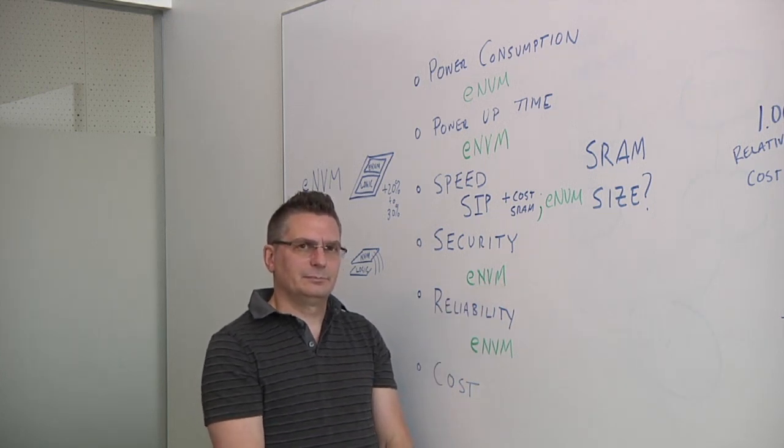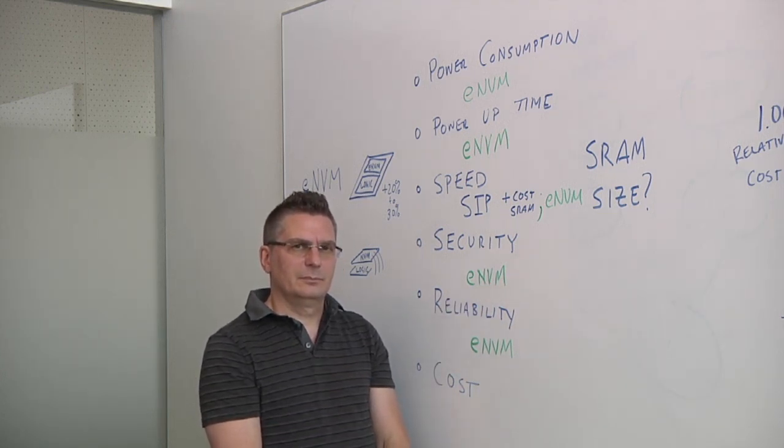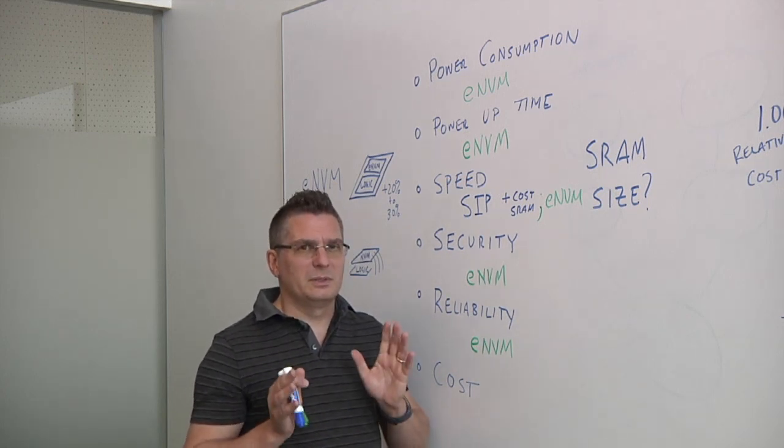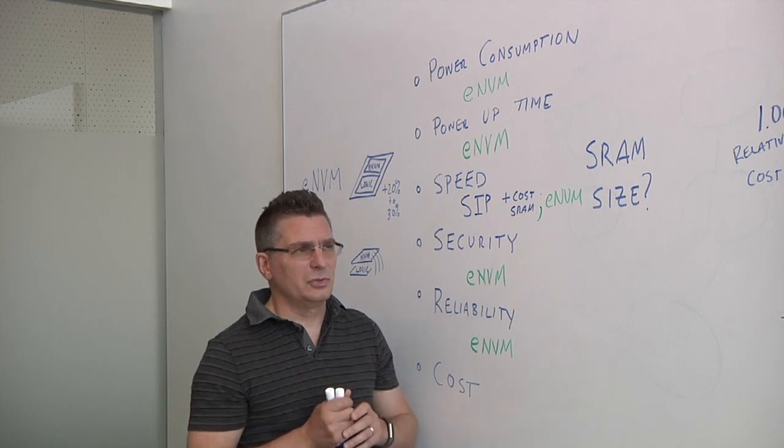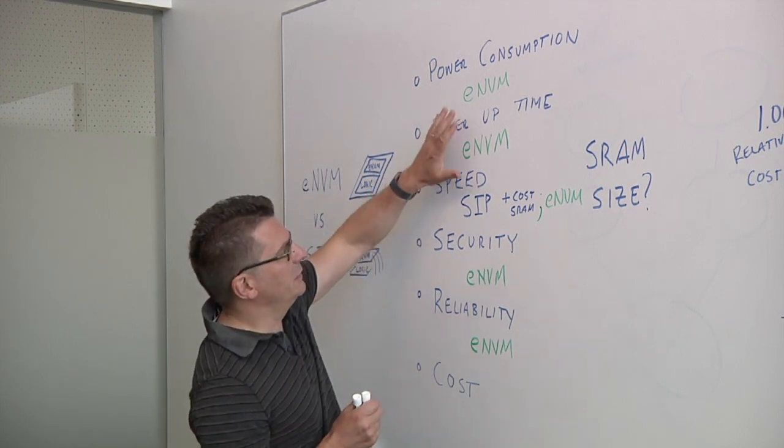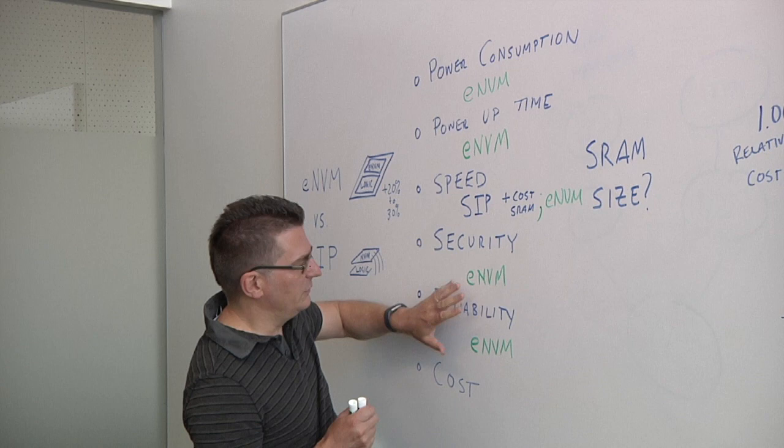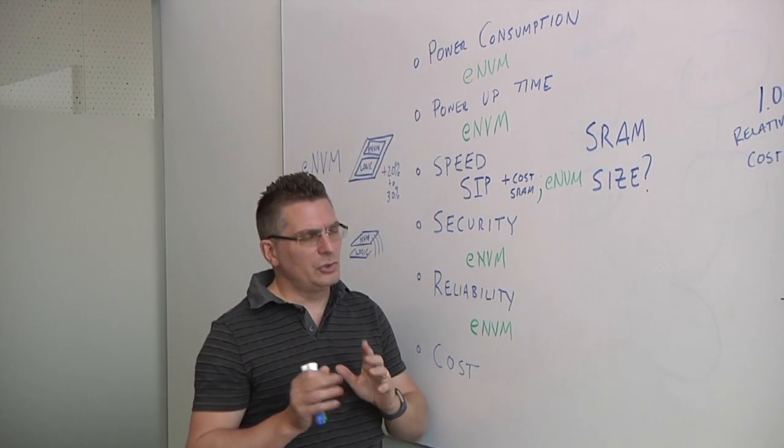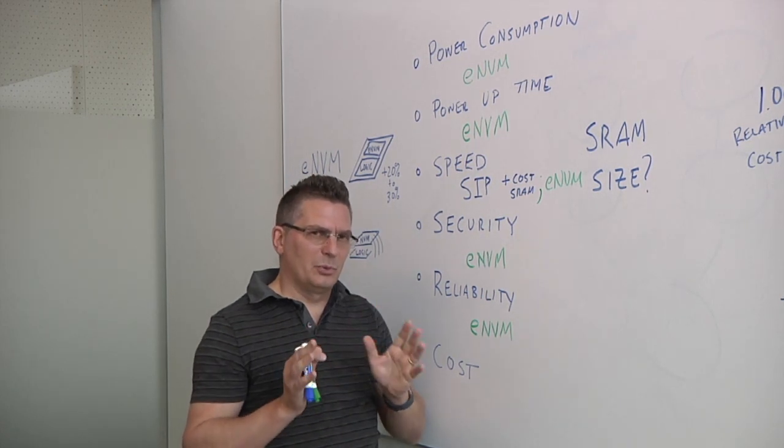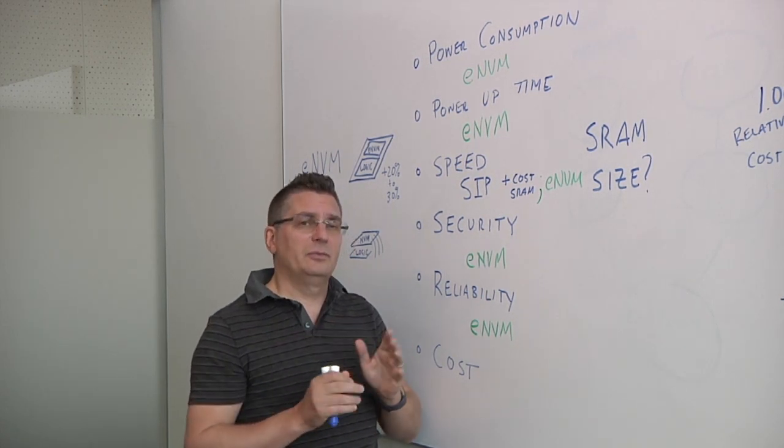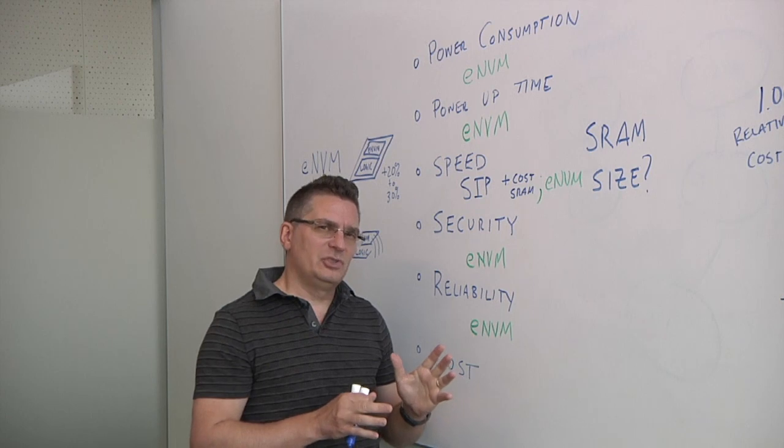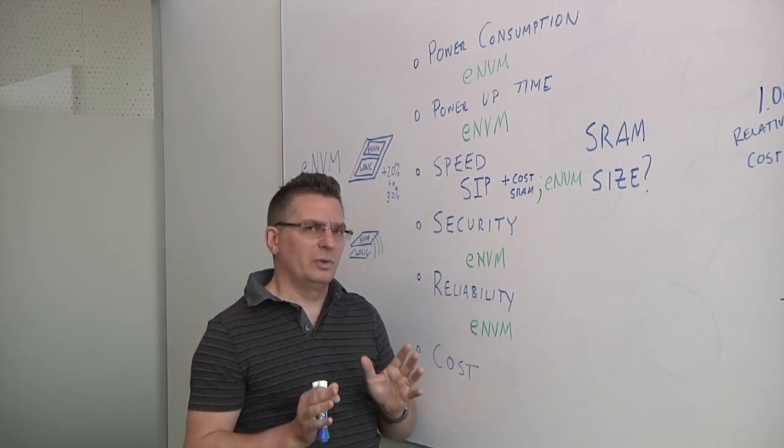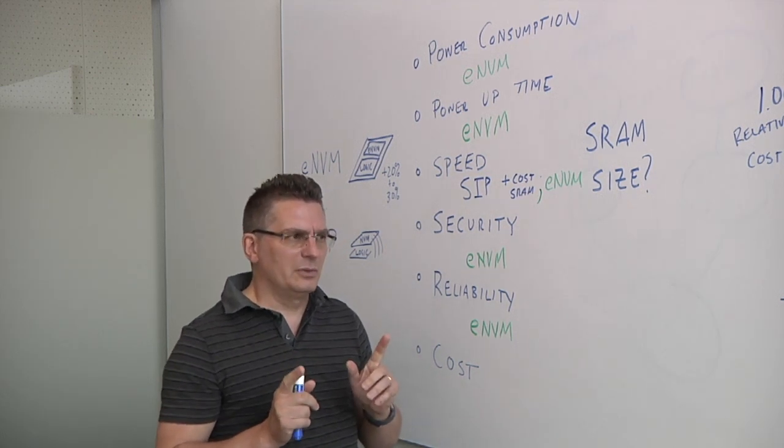As we get out to the edge, one of the key variables there is cost. Which one's cheaper? And that's a great question. And this is probably where there's the biggest confusion in the industry. As you see, I've kind of indicated a lot of the advantages of ENVM, but often it's considered that SIP is always the lowest cost. And I'm going to show you some examples. And this is taken directly from our data, internal to GF, as well as working with our customers to find the right solution for them.